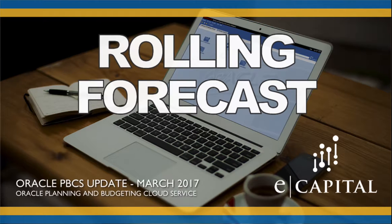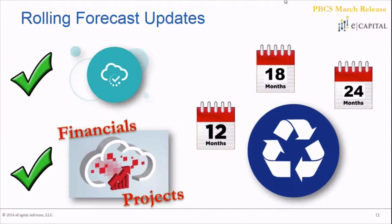The first update we're talking about today is the rolling forecast update. Those familiar with PBCS know we've already had rolling forecast functionality, and this month it's being implemented for ePBCS — specifically for the financials and projects module, not yet for workforce or capex. This is a great way for your organization to shift forecasting from a shrinking one-year outlook to continuously forecasting 12, 18, or 24 months — or by quarters such as 4, 12, or 18 quarters.